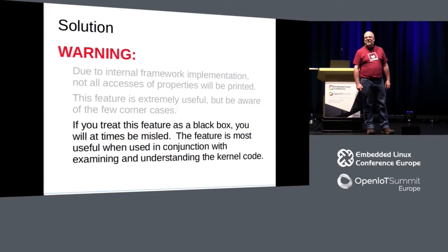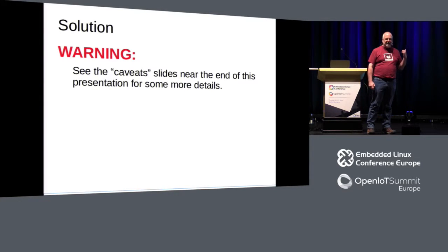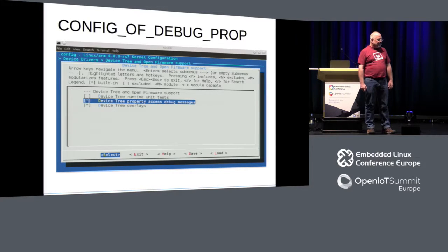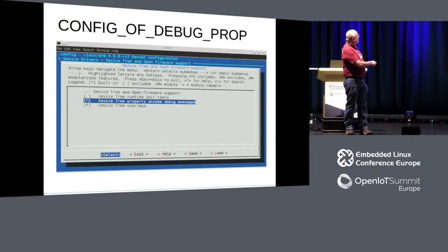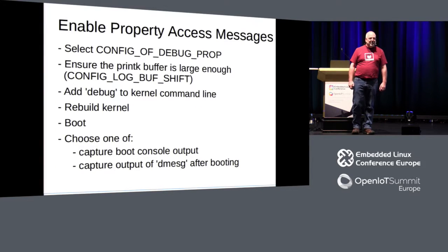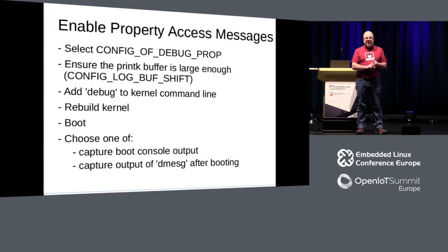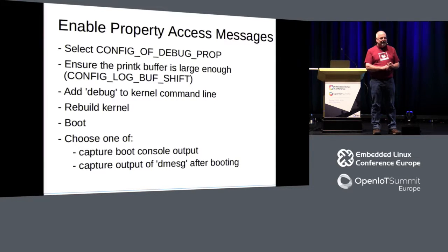There are times you really do want to be looking at the kernel code in association with this. It's really easy to turn on — just turn on the config option. Being in the kernel, it's never quite that simple though. Your printk log buffer is probably too small, so you probably have to increase the size. You probably have to put 'debug' on your kernel command line to get the messages out, and you'll obviously have to rebuild and reboot your kernel.